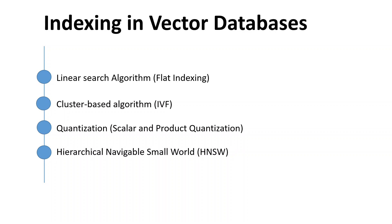Large language models work on vector embeddings. Vector embeddings are the numerical representation of text on which large language models get trained or fine-tuned. Large language models only understand these numerical representations, and that is where a lot of innovation is happening. One of the innovations is vector databases, which store, search, and query high-dimensional vector embeddings, just as traditional databases store structured and unstructured data.